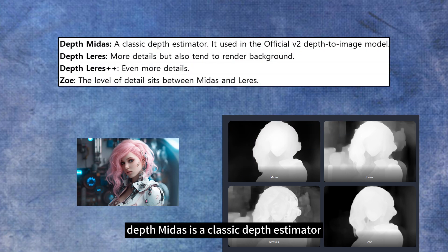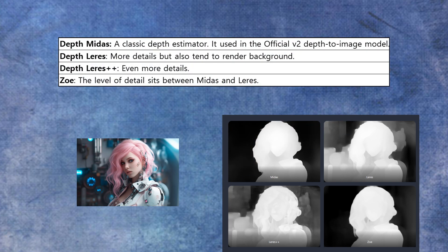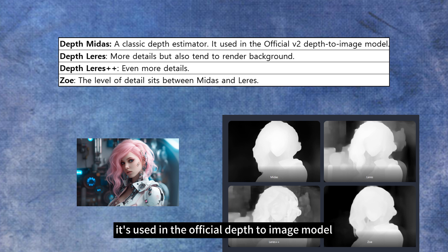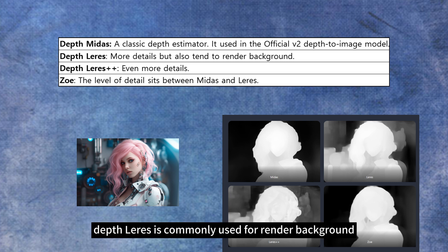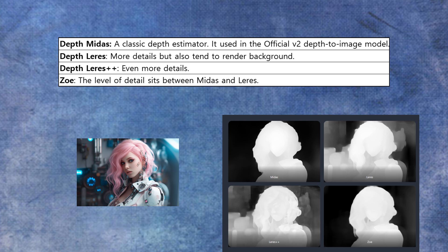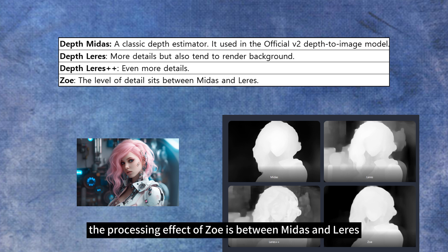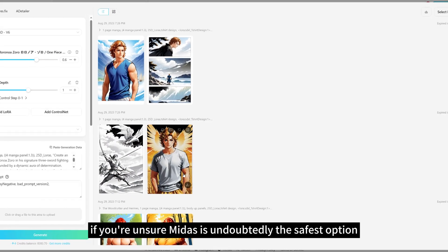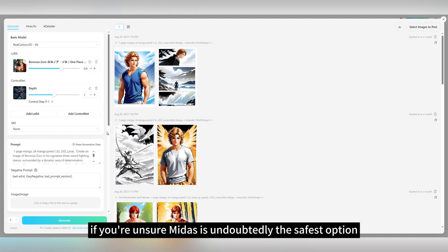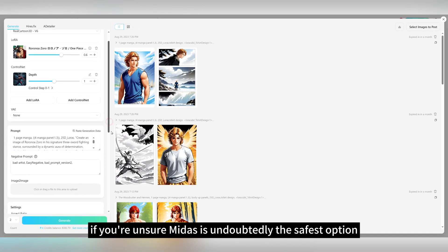Depth Midas is a classic depth estimator, used in the official depth-to-image model. Depth Leres is commonly used for rendering backgrounds. The processing effect of Zoe is between Midas and Leres. If you're unsure, Midas is undoubtedly the safest option.